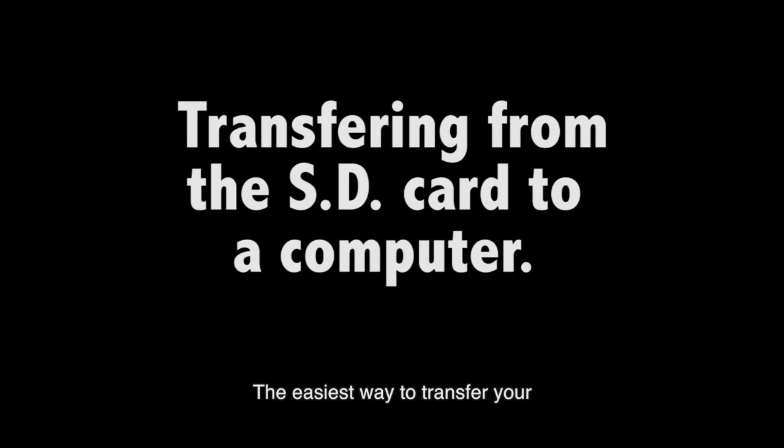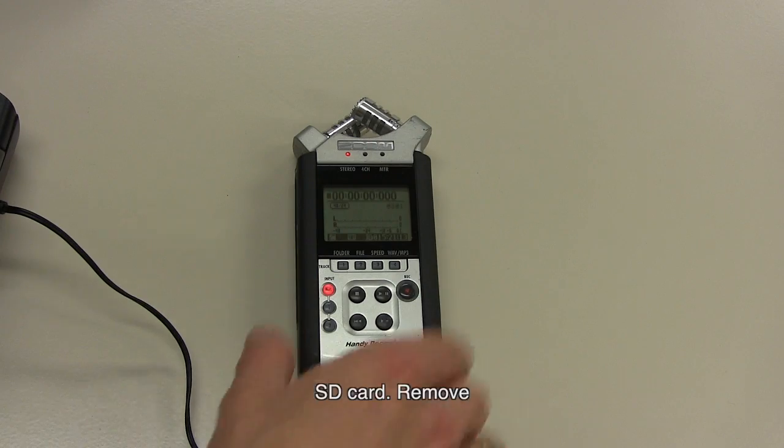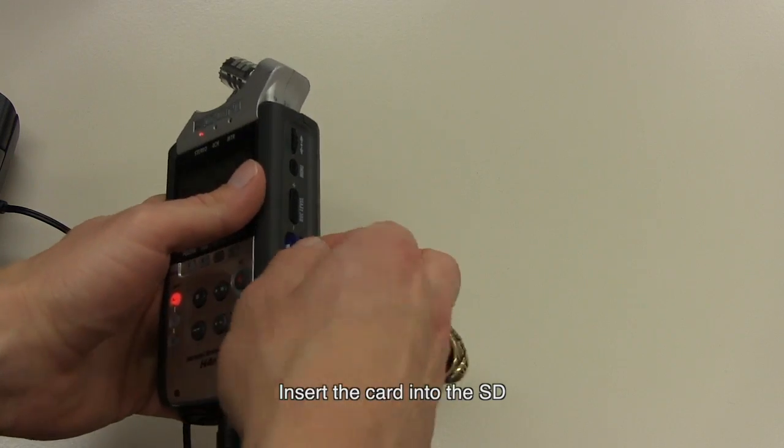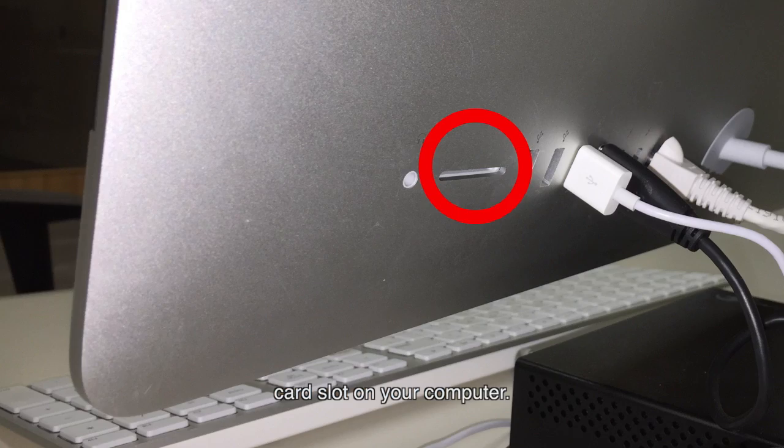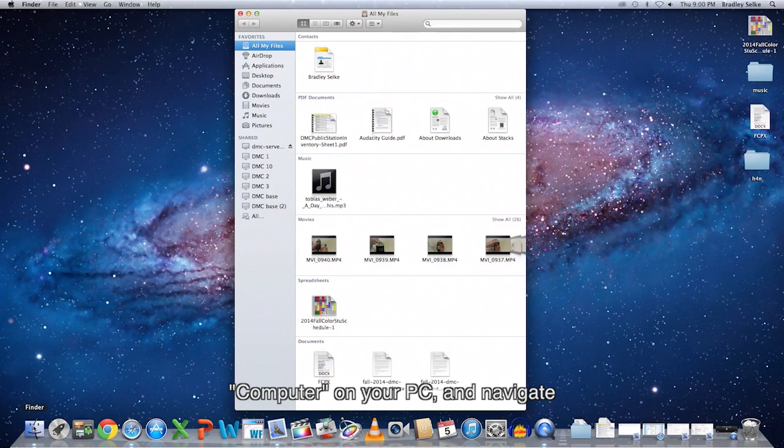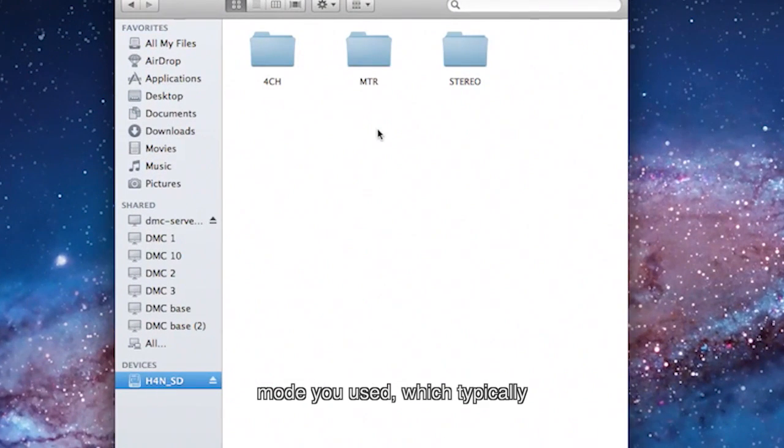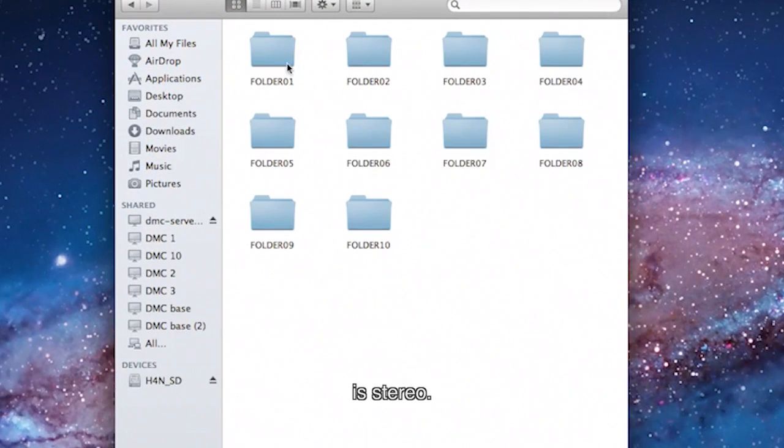The easiest way to transfer your files onto your computer is by SD card. Remove the SD card from the right side of the device. Insert the card into the SD card slot on your computer. Open Finder on your Mac or computer on your PC and navigate to the SD card. The files will be in the folder labeled with the channel mode you used, which typically is stereo.